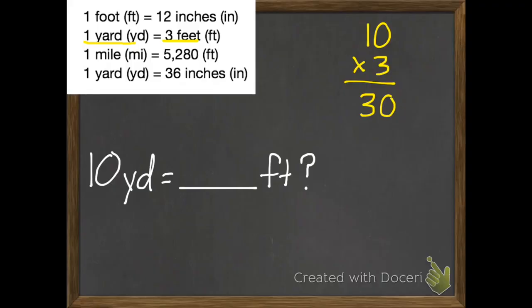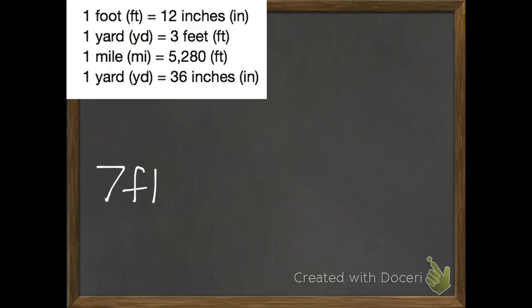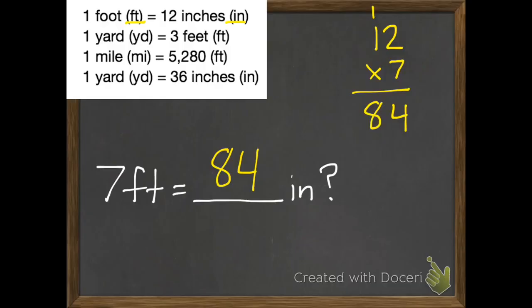I want you to try 2 more with me. 7 feet equals how many inches? First of all, again, we want to see which of these basic facts will help us. This one has feet and inches. So 1 foot equals 12 inches, and we have 7 feet. That's going to be 12 times 7. I'll give you a second to figure out what 12 times 7 is, and then you can check to see if you got it right. It's 84.